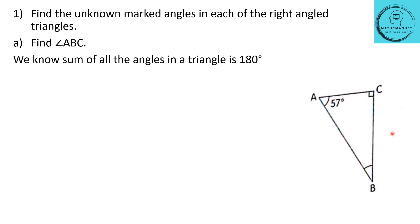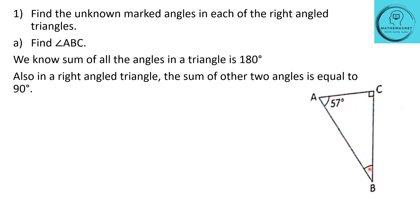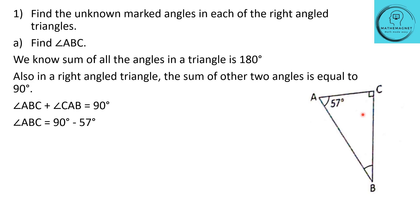They have given one angle as 57 degrees and the other angle as 90 degrees. We know the sum of all angles in a triangle is 180 degrees, and in a right angle triangle the sum of the other two angles is equal to 90 degrees. So angle ABC plus angle CAB equals 90 degrees, and angle ABC equals 90 minus 57, which is 33 degrees. The unknown angle ABC is equal to 33 degrees.